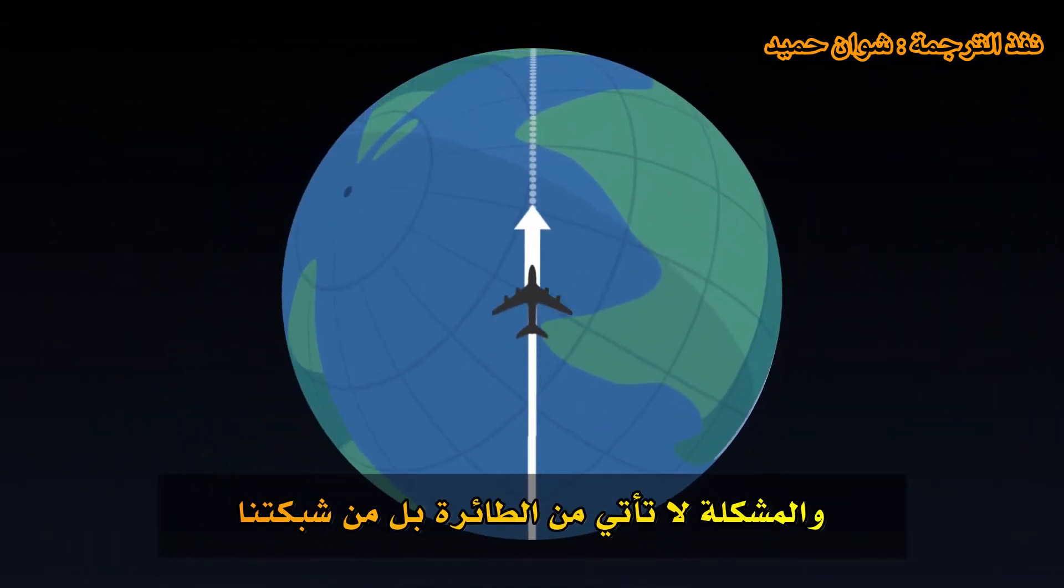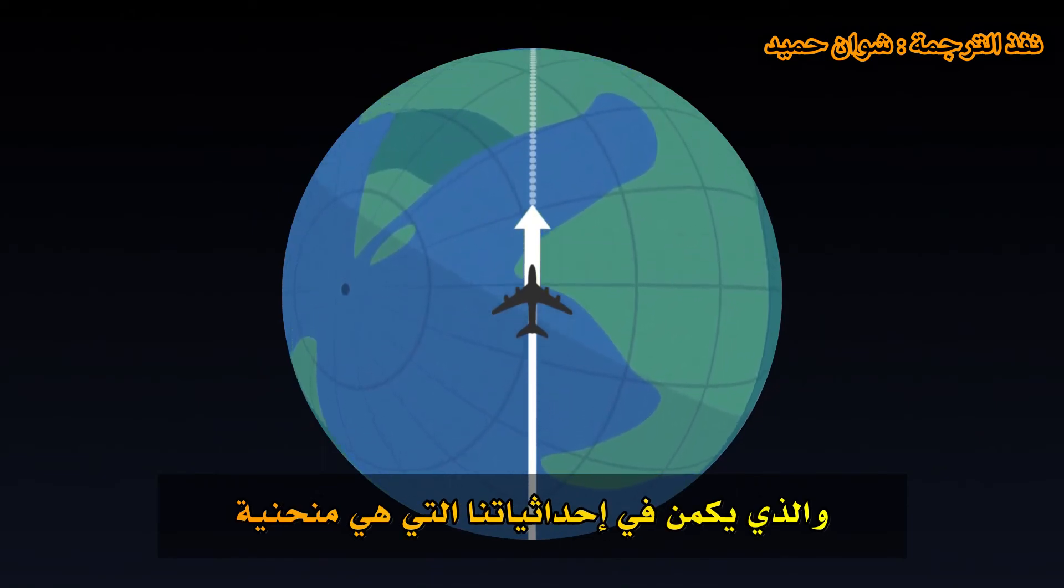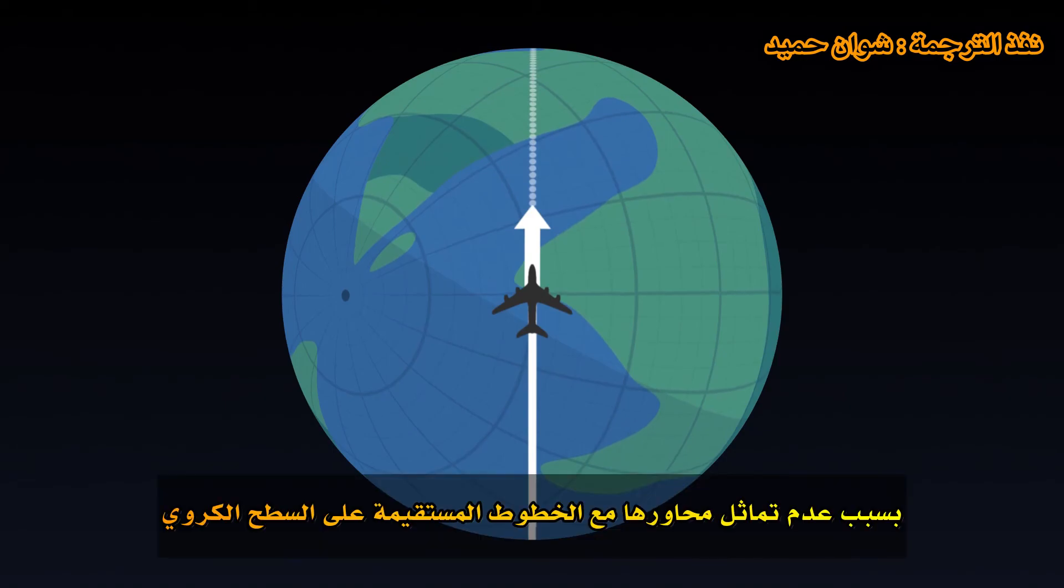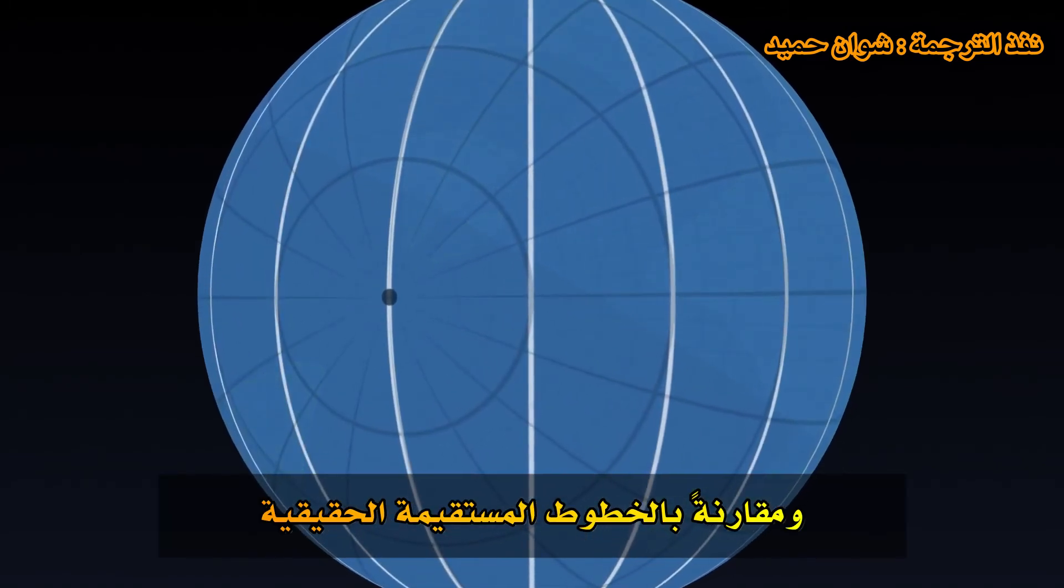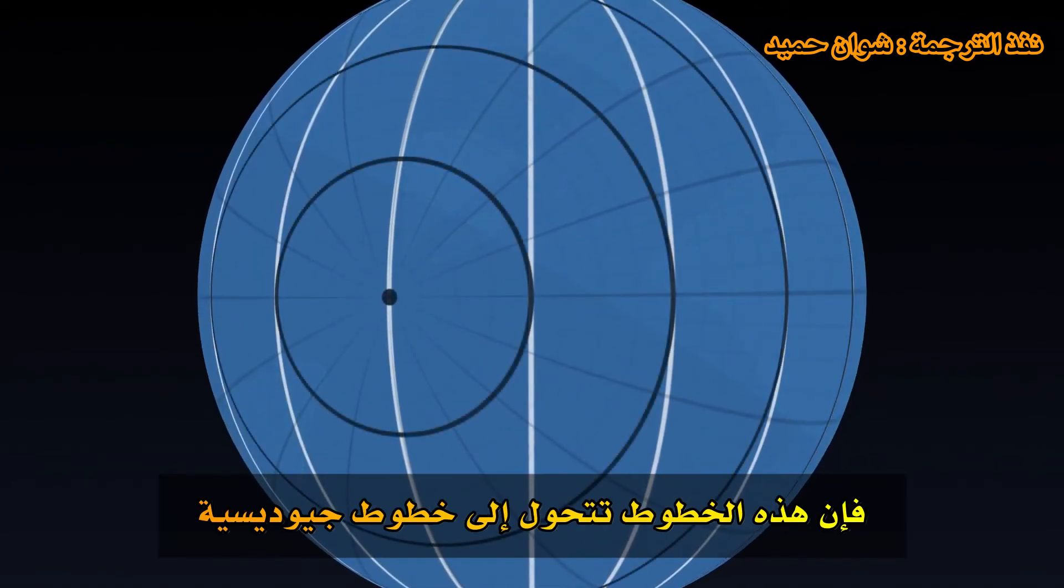The problem does not come from the airplane, but from our grid. It's our coordinates that are curved. Their axes do not correspond to straight lines on a sphere. Compared to real straight lines, geodesics, they turn.